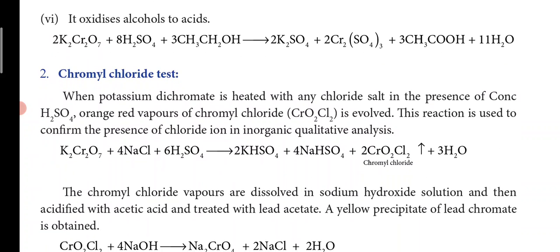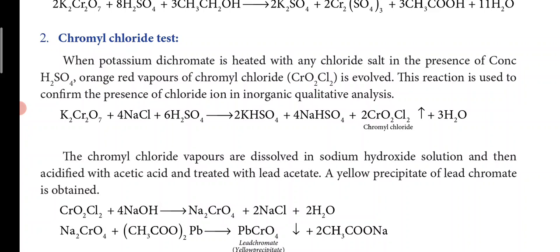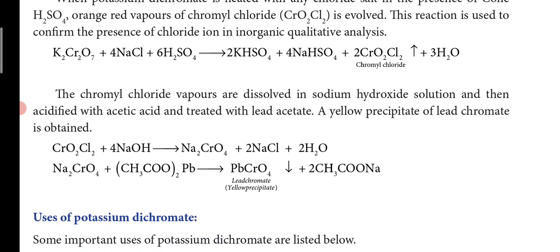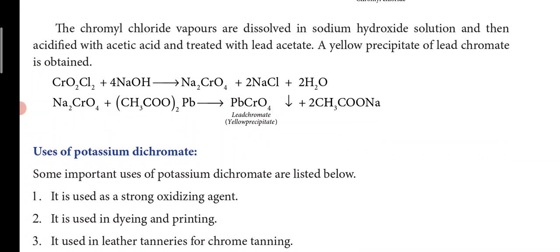An important test is the chromyl chloride test, which you would have done in 11th standard. When potassium dichromate is heated with any chloride salt in the presence of concentrated sulfuric acid, orange-red vapors of chromyl chloride are evolved. This reaction is used to identify the presence of chloride ion in inorganic qualitative analysis. The chromyl chloride vapors are dissolved in sodium hydroxide, then treated with lead acetate and acetic acid to get a yellow precipitate of lead chromate.